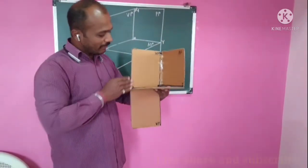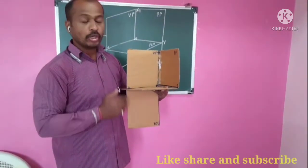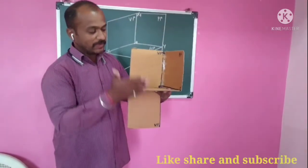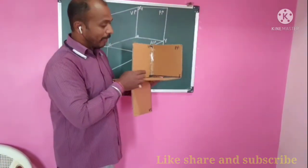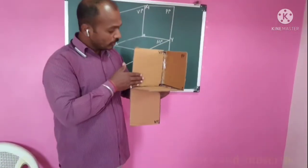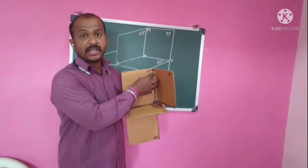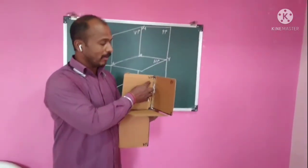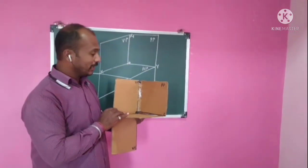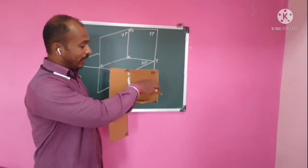This is the second plane. This plane is perpendicular to the ground as well as perpendicular to the HP. So this is known as VP — vertical plane. Now one more plane is there — this plane is called as PP, the profile plane.